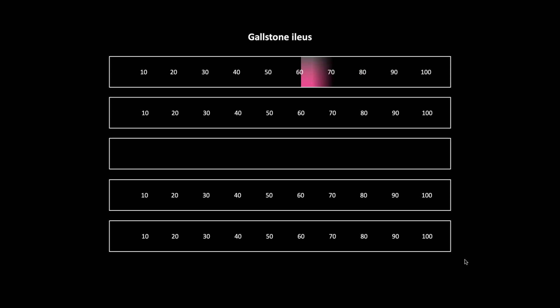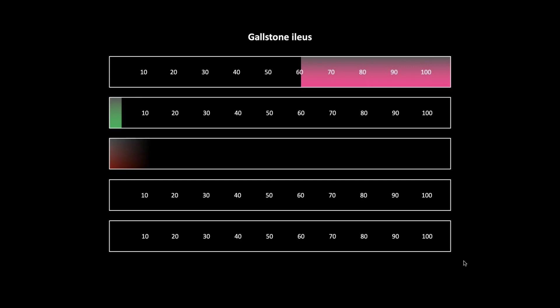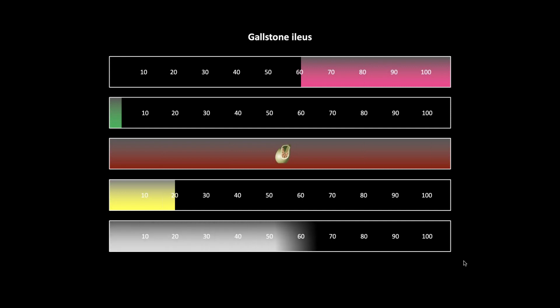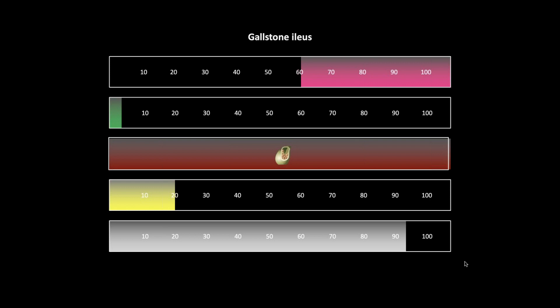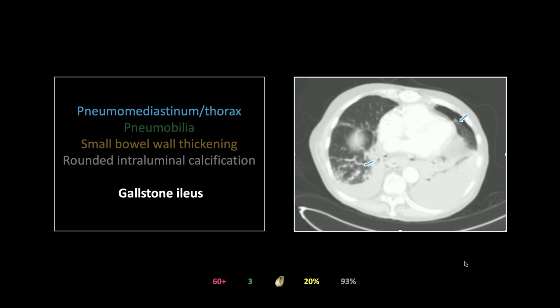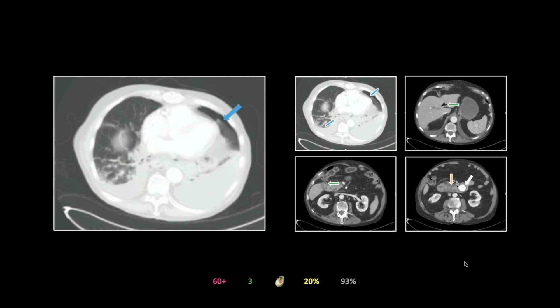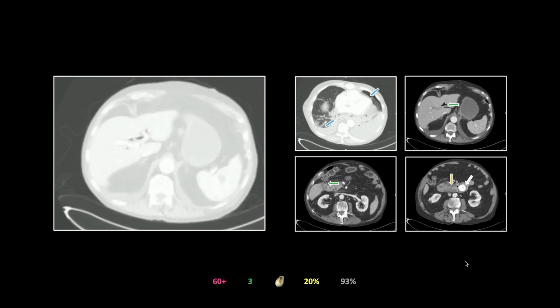Gallstone ileus — my favorite case. More common in women because of gallstones, and in women over 60 for this entity. Incidence around three to four per hundred thousand. The risk factor is gallstones — no shock there. Mortality is a surprisingly high 20 percent, with 93 percent CT sensitivity. This patient presented dramatically, with retching so severe there is pneumomediastinum and a pneumothorax on the lung windows, almost certainly indicating a lower esophageal perforation.